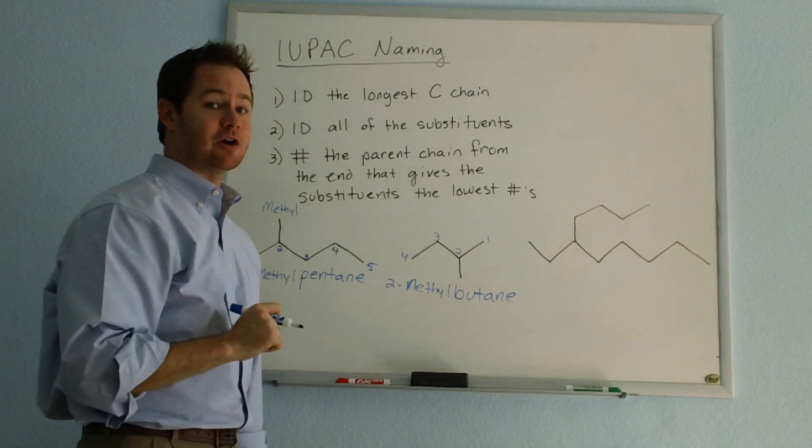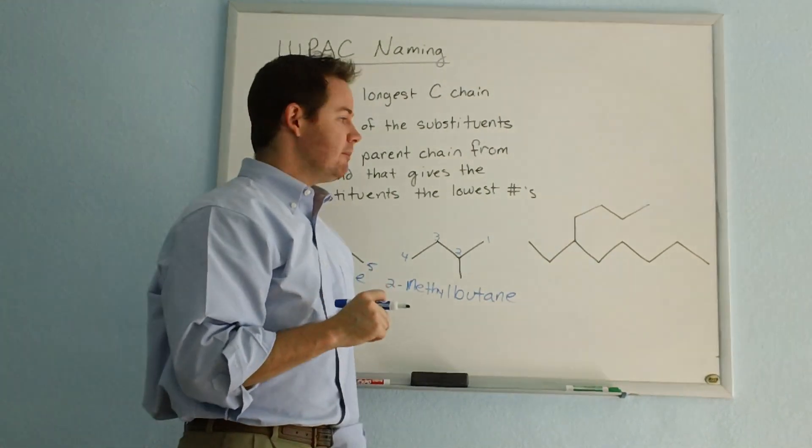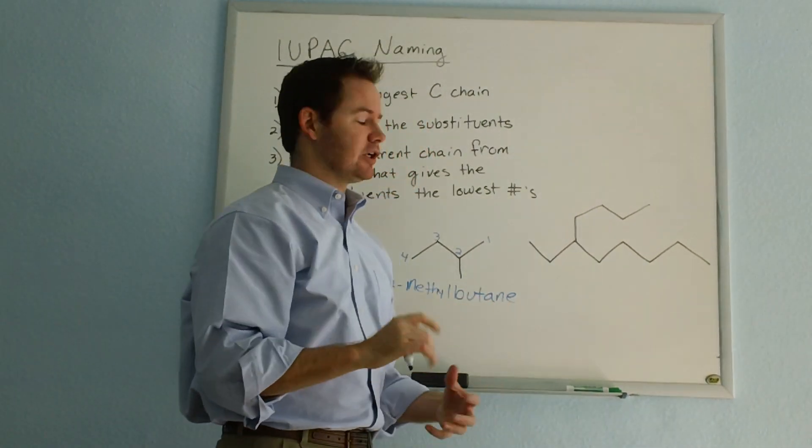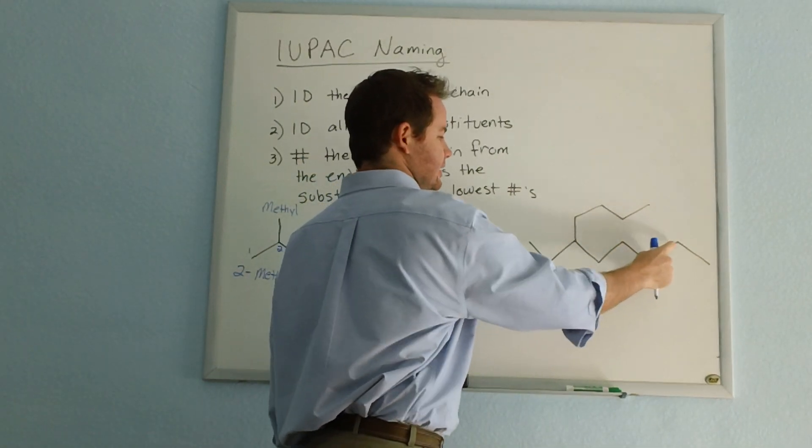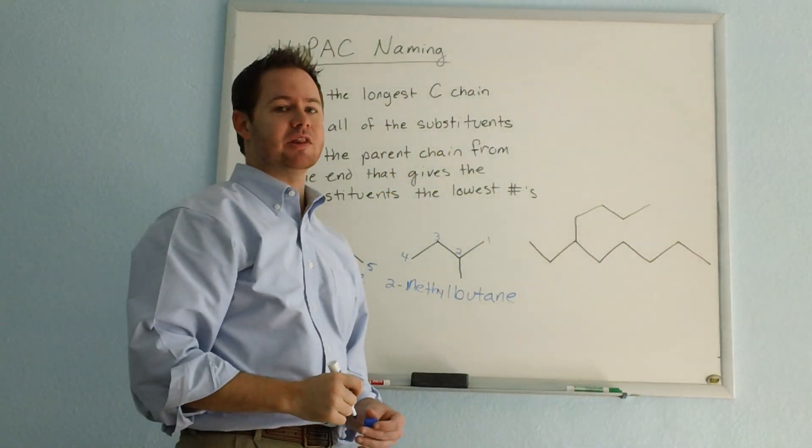Now let's take a look at our last example. And this one's a little bit more complex. So if we go to number our carbons here and find the longest chain, we might start from the left and say one, two, three, four, five, six, seven, eight. Eight carbons seems like a long chain and we might think that that's the longest.